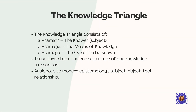At the heart of Indian epistemology is what we can call the knowledge triangle. This consists of three elements present in any act of knowing. First, there is pramata — the knower or subject who is seeking knowledge. Second, there is pramana — the means or tools by which knowledge is acquired. And third, there is prameya — the object or concept that is to be known. These three elements form the core structure of any knowledge transaction, quite similar to modern epistemology's understanding of subject, object, and the tools we use to know things.